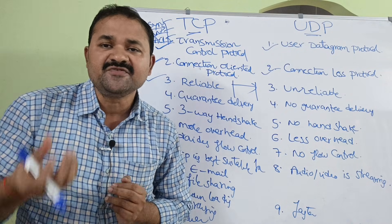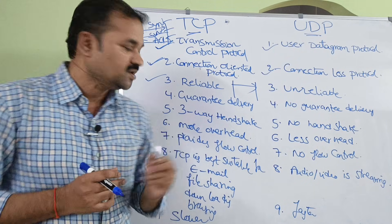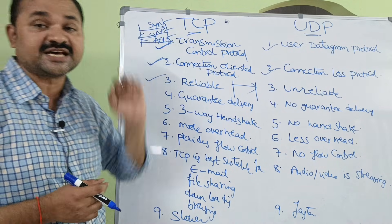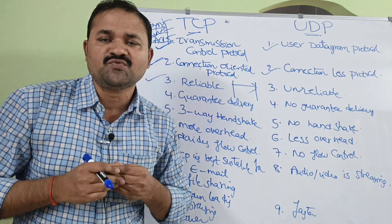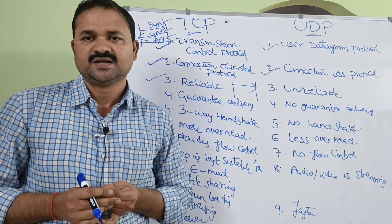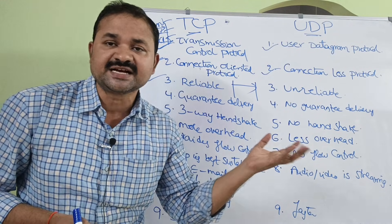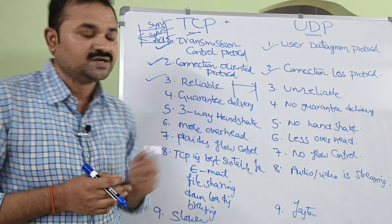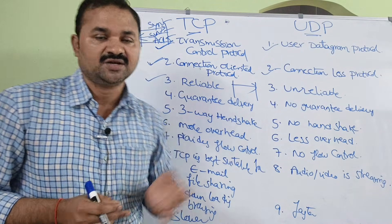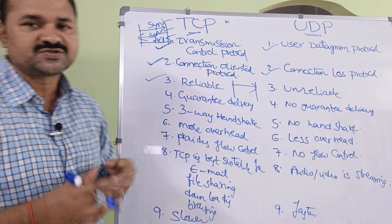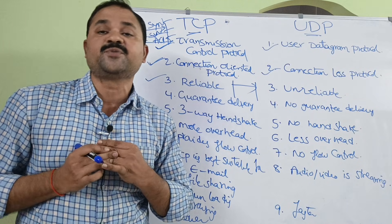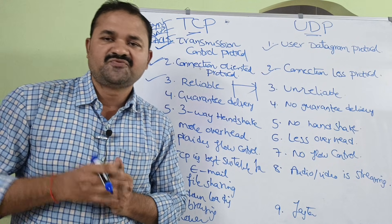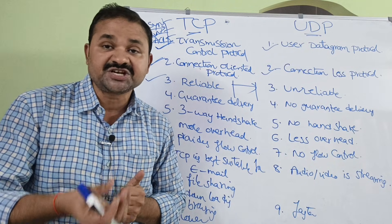In TCP, the data will be represented in the form of segments. TCP uses three segments for the handshake. First, the client will send a SYN request to the server, indicating that the client wants to establish a connection. If the server is also ready, it sends a SYN back — SYN stands for Synchronization — and then the client provides the acknowledgement. That is why TCP is a connection-oriented protocol: connection is established first, data is transferred, and once transfer is complete, the connection is terminated.